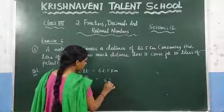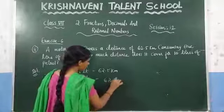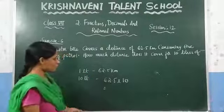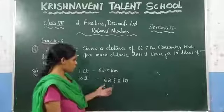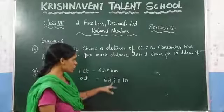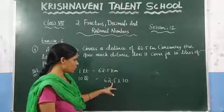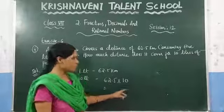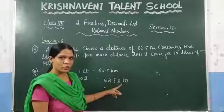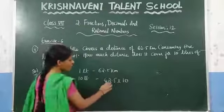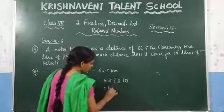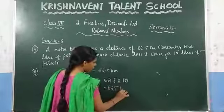Just multiply 62.5 into 10. As discussed in the previous session, if you are multiplying a decimal number with 10, you need to shift the decimal point as many places as there are zeros. Since there is one zero, you need to shift the decimal point to the right by one number. So what we get here is 625 km.